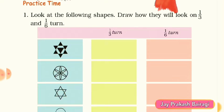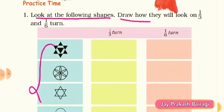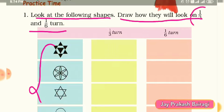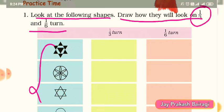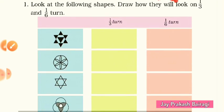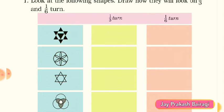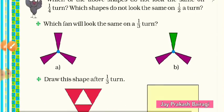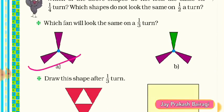Now we have some practice time. First we have to read this question, then we'll solve it. Look at the following shapes — here we have the shapes. Draw how they will look on one third and one sixth turn. Before solving this question, we have to understand what one third turn is. In the previous video we already clarified what one third turn is, so here I have that picture.